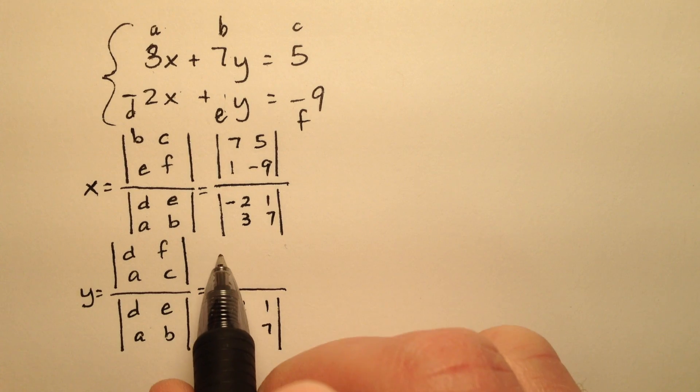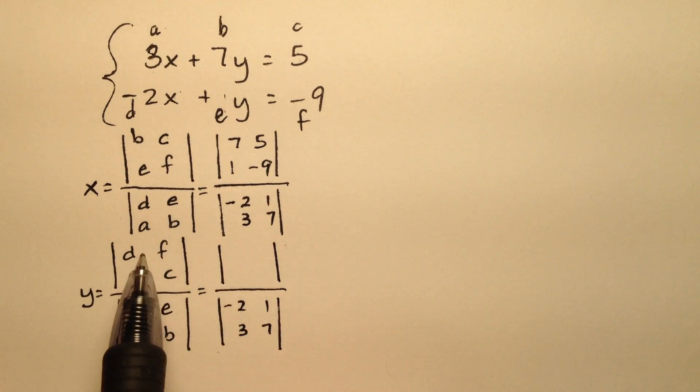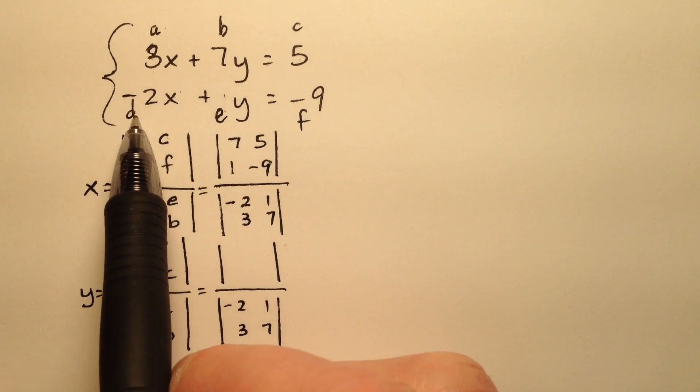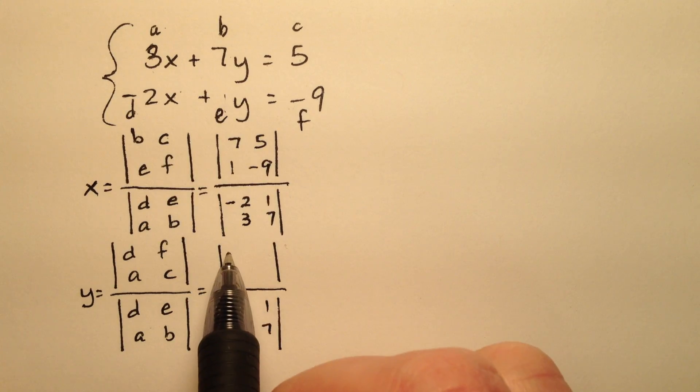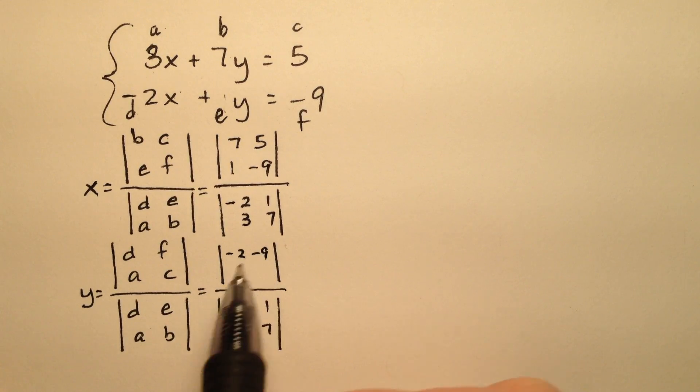So now let's get my numerator for my Y. D, F, so D, F, negative 2, negative 9. And A, C, 3 and 5.